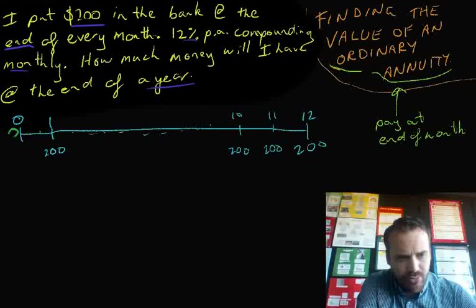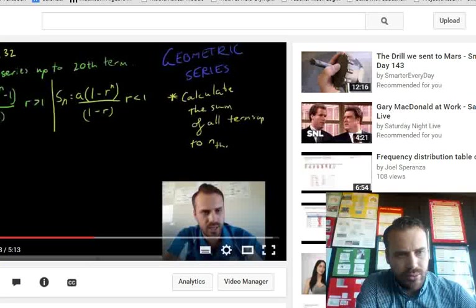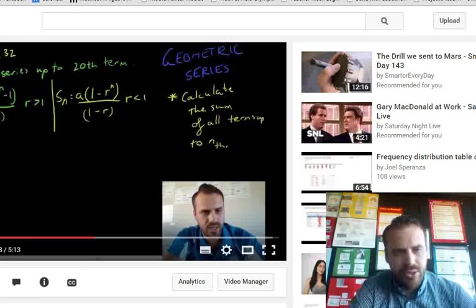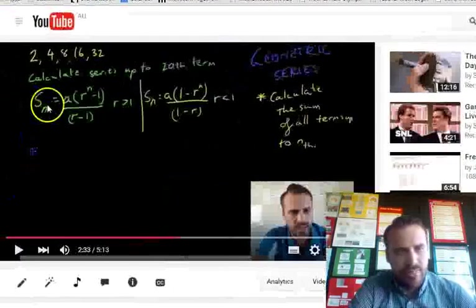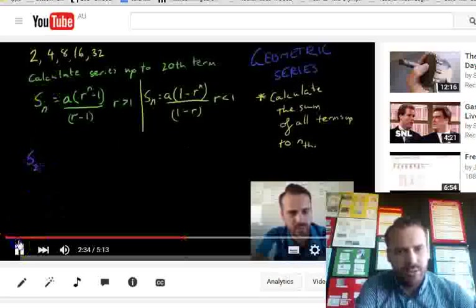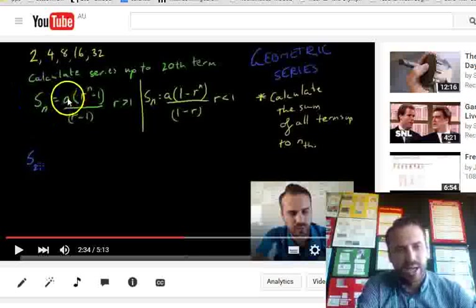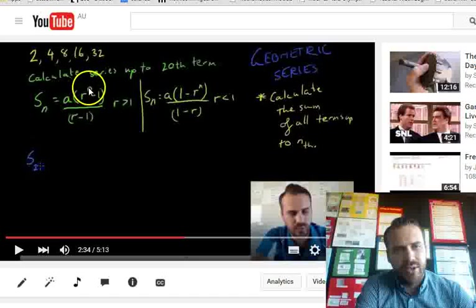Now, if I pull up my YouTube video, I'll just move this over a little bit. You can see here that our geometric series, the sum of the geometric series is equal to a bracket r to the power of n minus 1 over r minus 1.